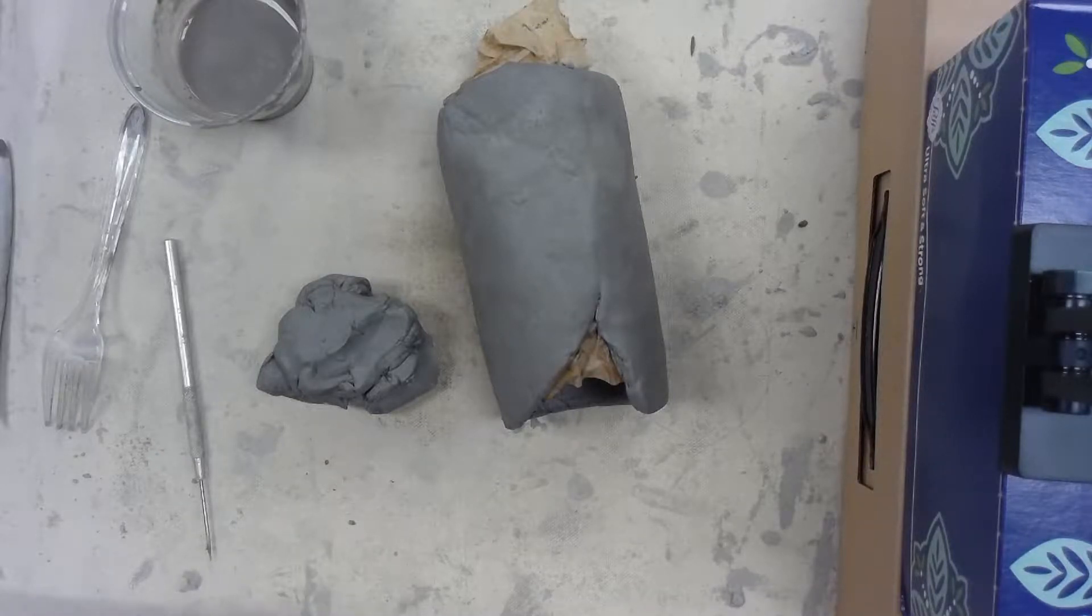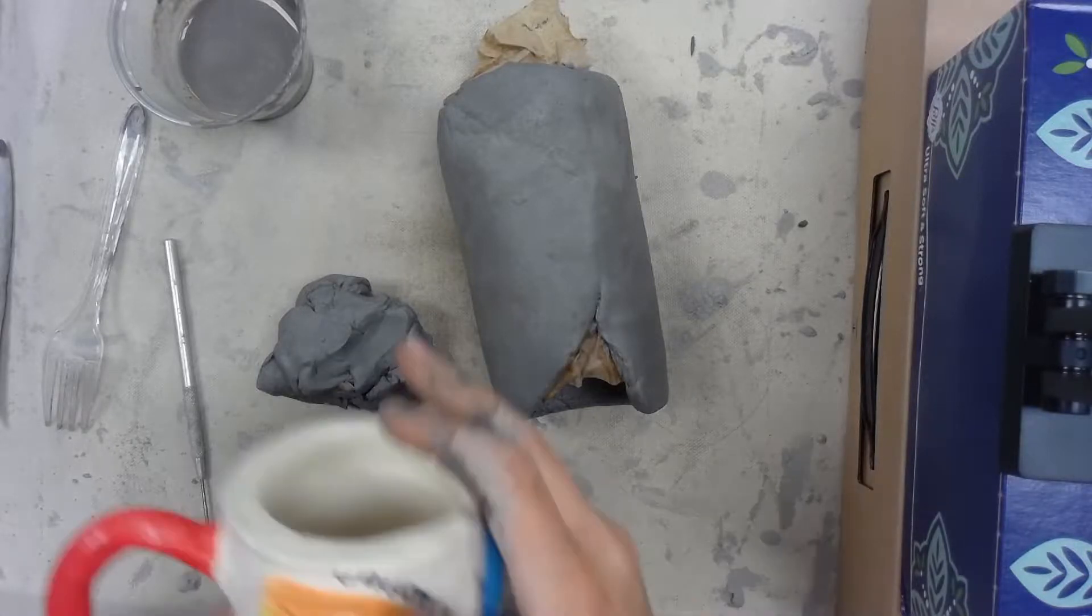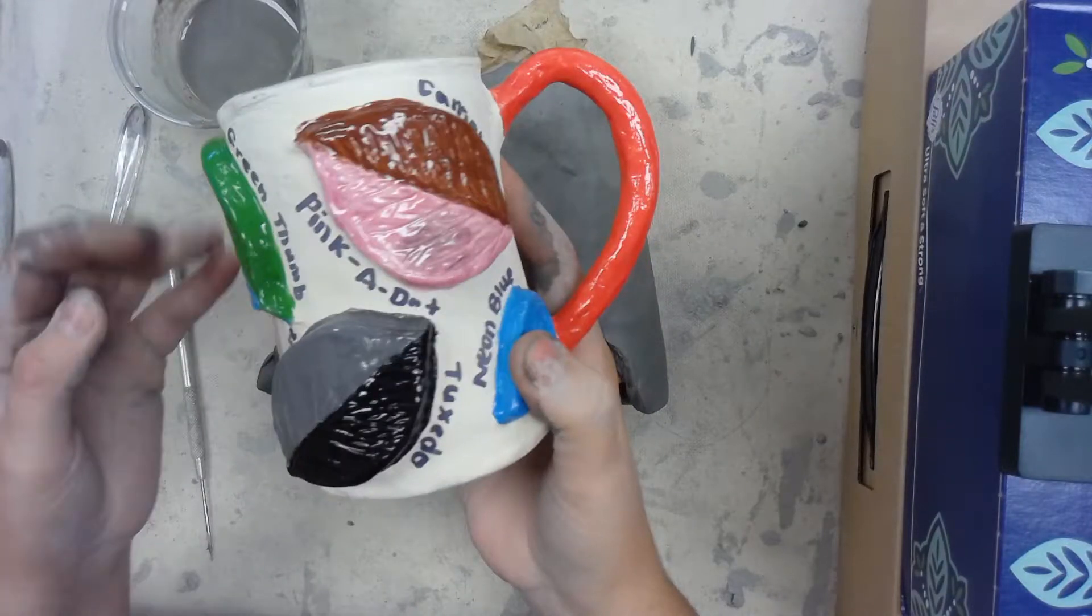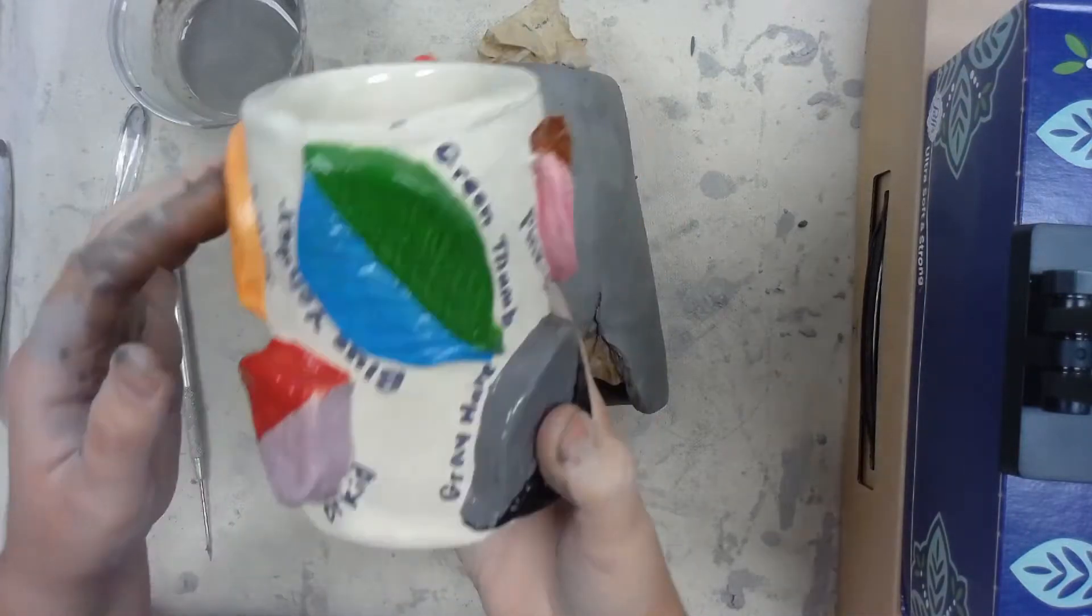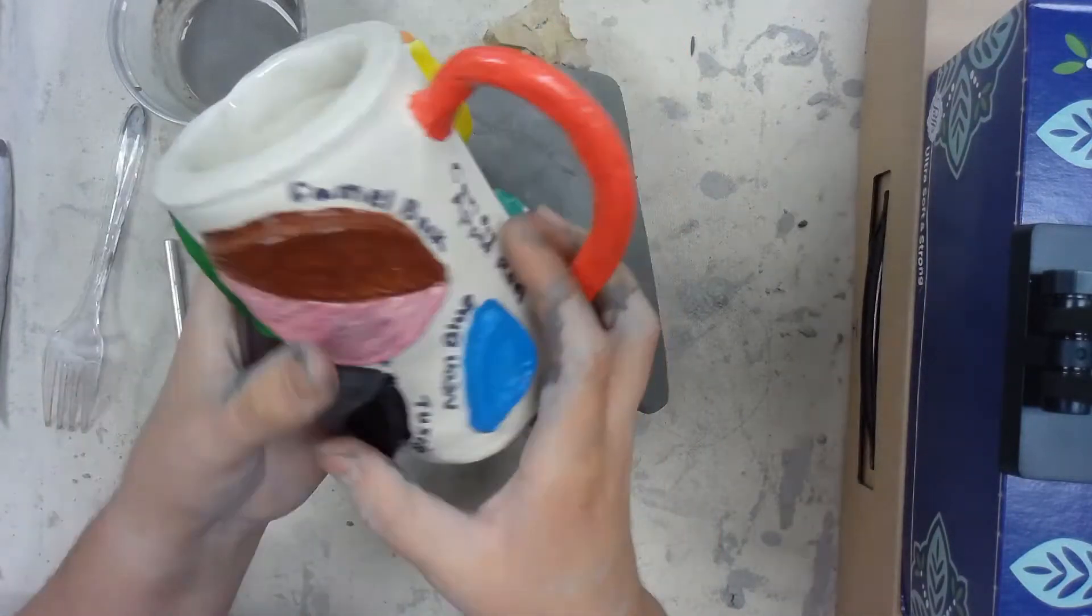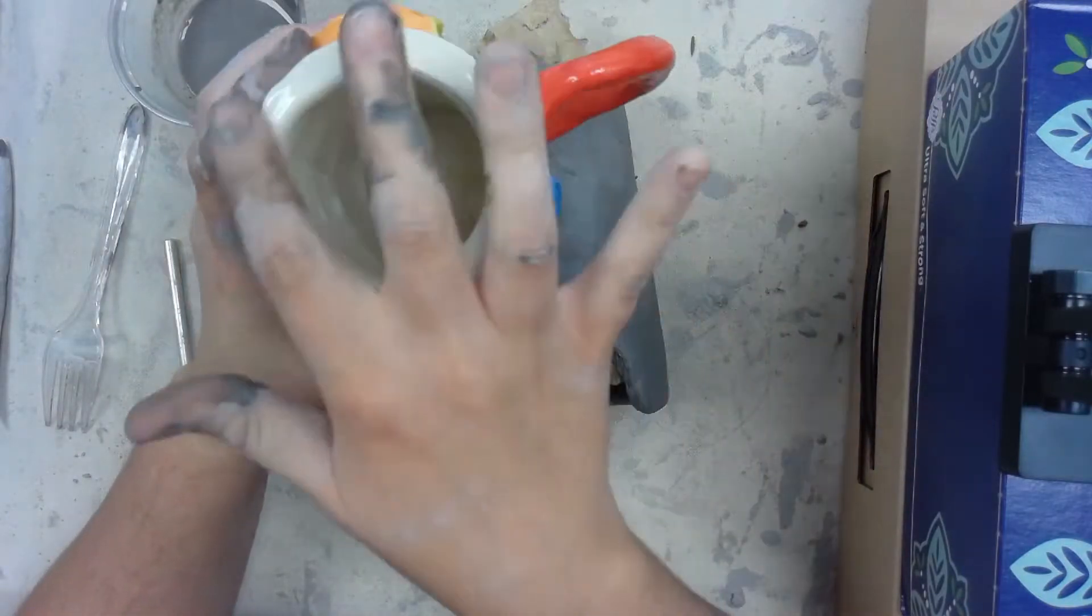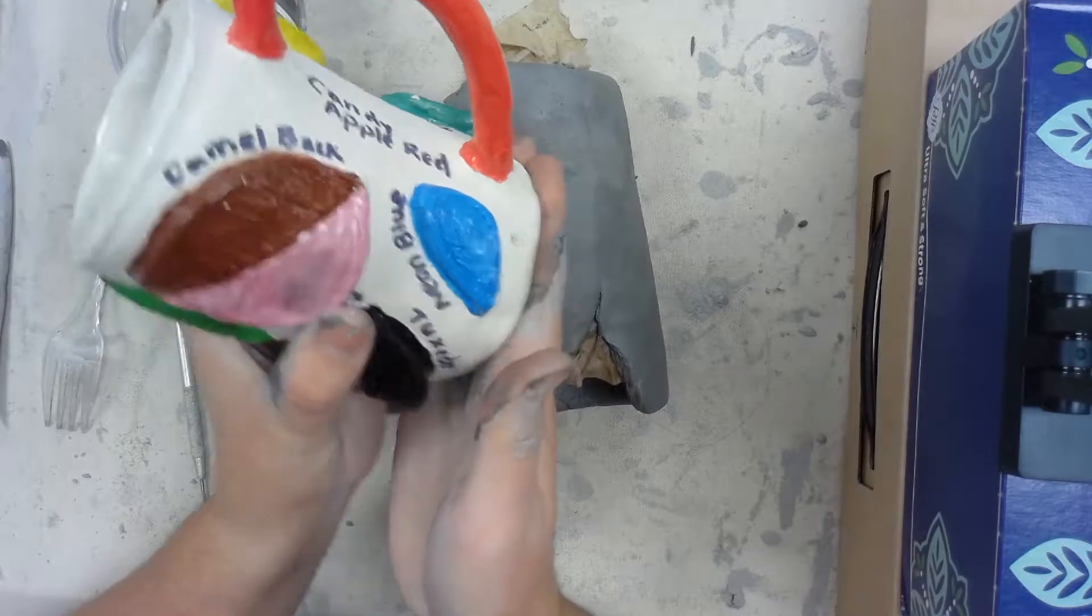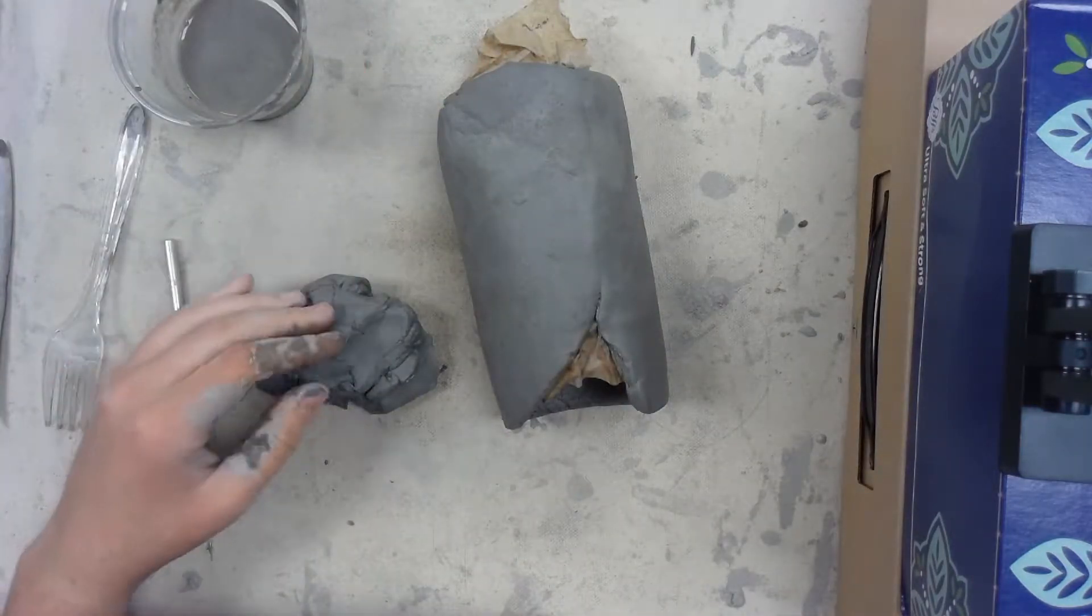In this video I'm going to show you the next step of making a mug. Here's my example of my mug that was hand built. Right now we have this kind of tube part made, and in this video I'm going to show you how to make the bottom and attach it.